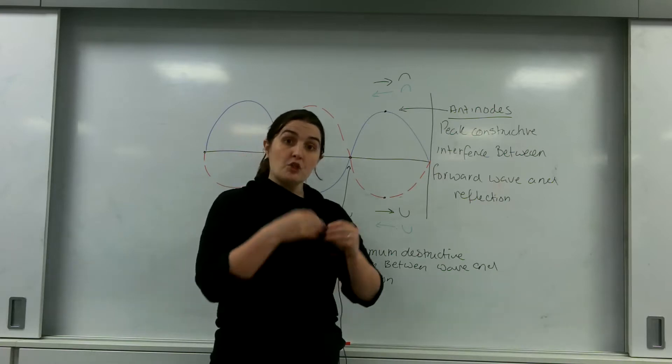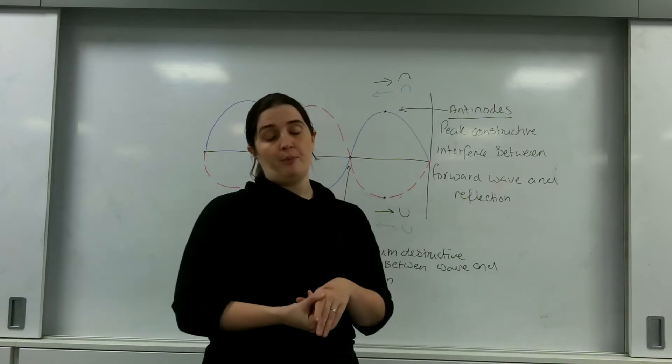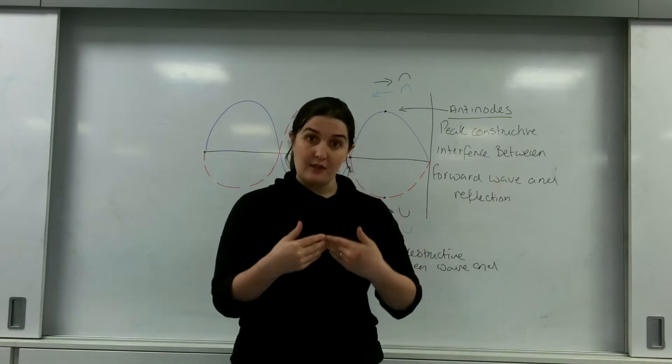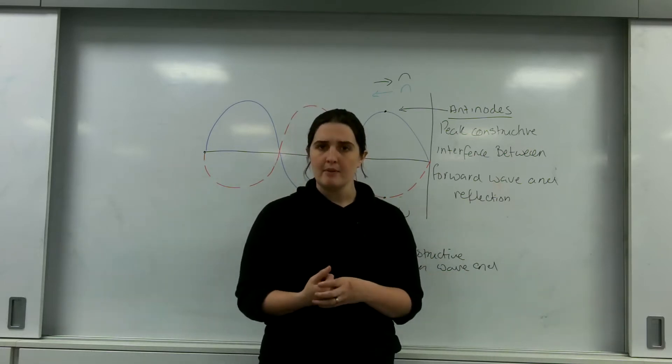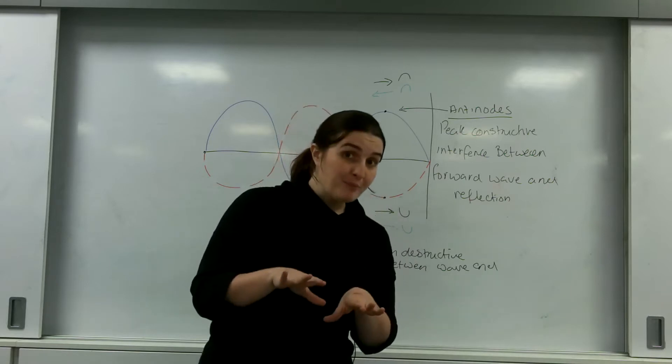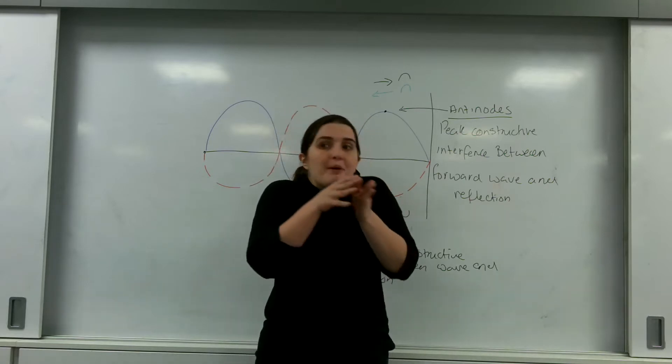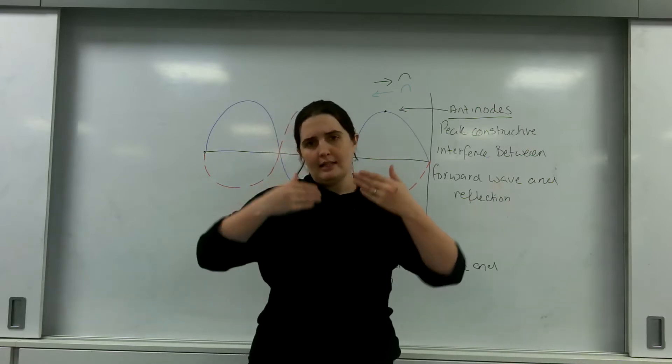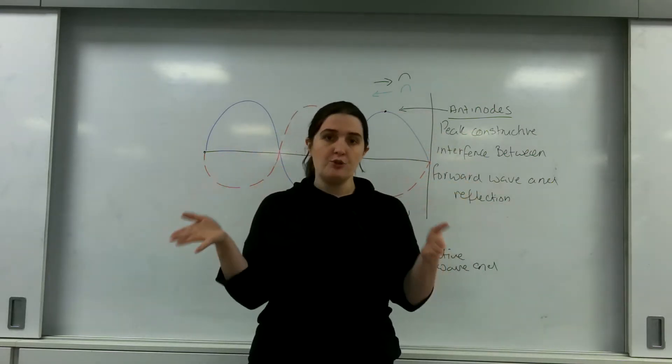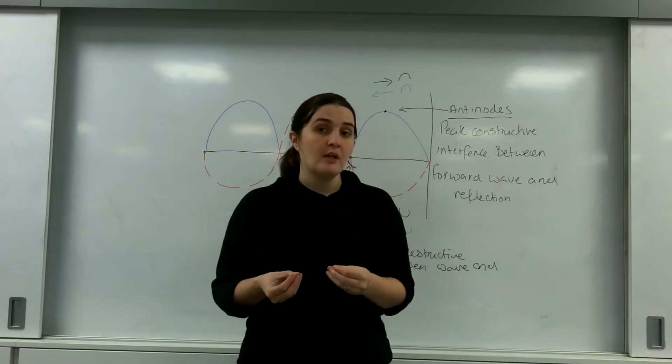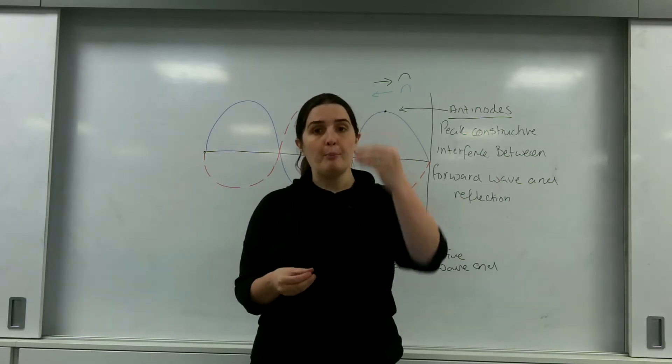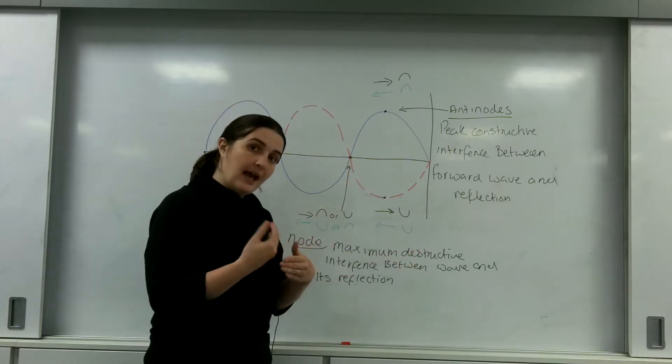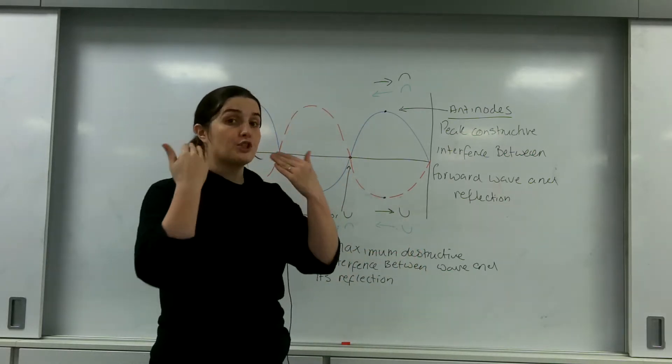Remember that waves superpose upon each other. When they meet each other, they interfere and they create a resultant wave. And that is what we see. We don't see both of them. The word superimpose means that if you superimpose your image on a picture, you can clearly see your image and the picture. There are two different objects. You can see both of them. Waves superpose. Waves interfere and we see a resultant wave.